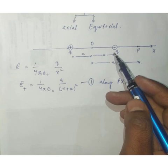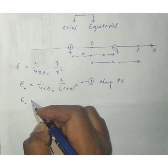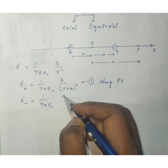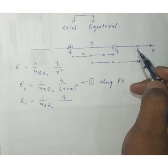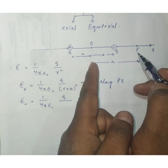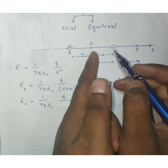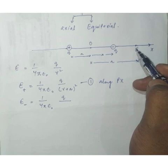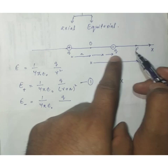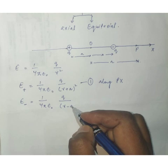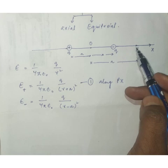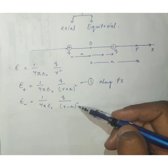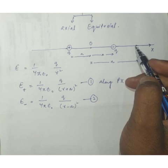Similarly, we find the electric field at point P due to the negative charge, called E−. Using the same formula, E− = (1/4πε₀) × q / (r − a)², because the distance between point P and the negative charge is (r − a). Let this be equation two.